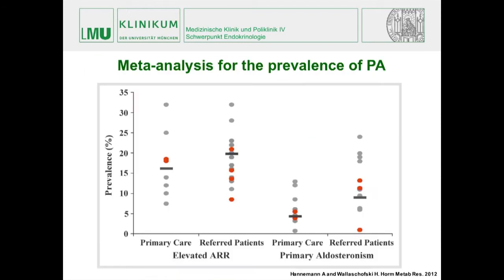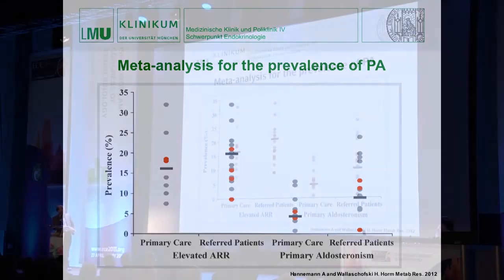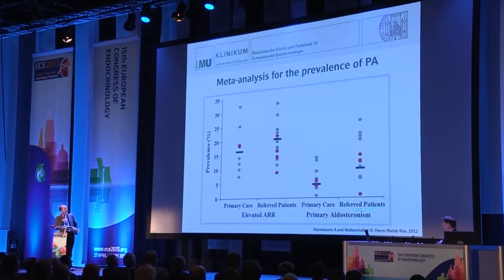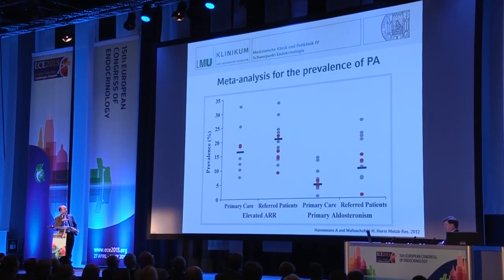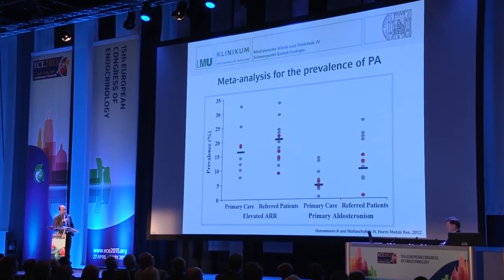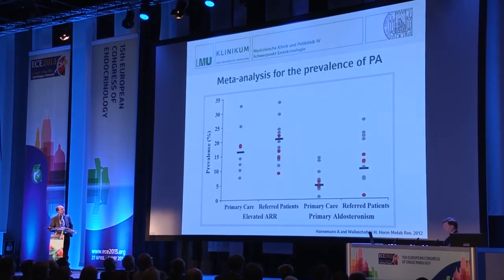From a clinical perspective, based on a meta-analysis from last year, primary aldosteronism is quite common — in fact, it is the most common secondary cause of hypertension. Depending on whether you're looking at primary care or referred patients in a specialized center, somewhere between 5 to 10 percent of patients with hypertension turn out to have primary aldosteronism.